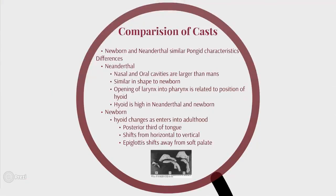We're going to talk about the comparison of casts. They created silicon casts, and they showed that newborns and Neanderthals had very similar pongid characteristics. However, there are some differences. In the Neanderthal, the nasal and oral cavities are much larger than in man's, which is why the SVT was much thicker and wider at the top than it was for modern man.